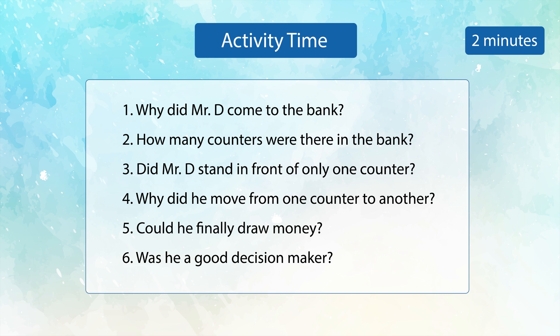As questions are posed, a few can raise their hands and give their responses. Why did Mr. D come to the bank? How many counters were there in the bank? Did Mr. D stand in front of only one counter? Why did he move from one counter to another? Could he finally draw the money? Was he a good decision maker?